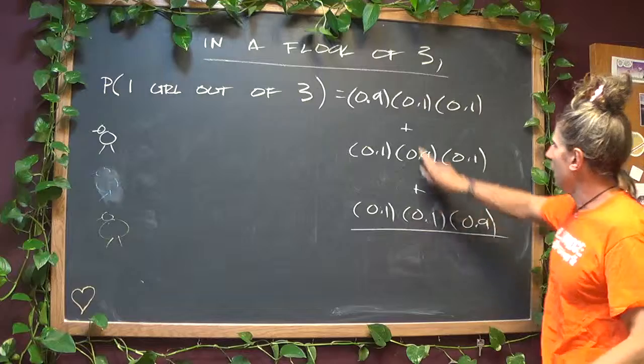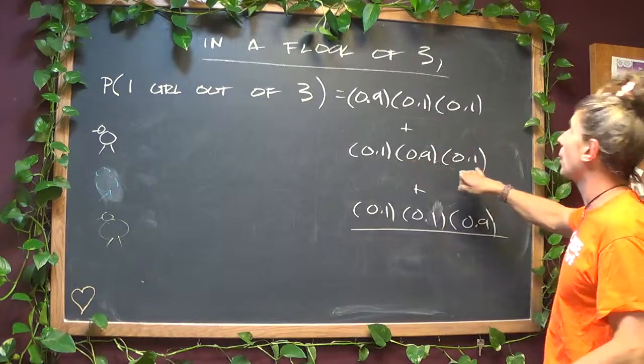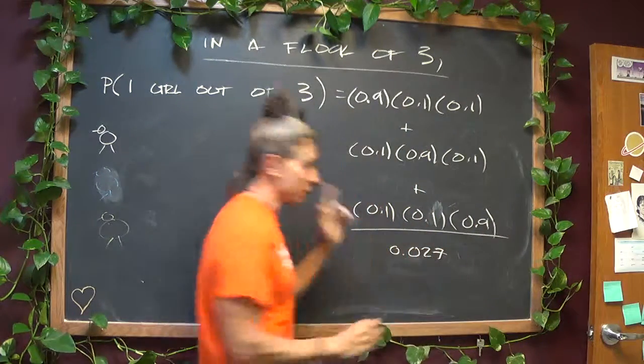If you sum all these up, all these additions, that's 0.009, 0.009, 0.009, that's 0.027, 2.7 percent.